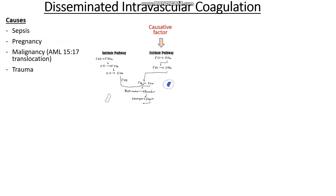Essentially, the interaction between these causative factors goes on to inappropriately activate our extrinsic pathway. We get activation of tissue factor, of factor III into factor IIIa, setting off the extrinsic pathway inappropriately, and therefore we end up producing lots and lots of thrombin. If you remember about the clotting cascade, this increase in thrombin can actually boost the activity of the intrinsic pathway, and therefore we end up producing lots and lots of uncontrolled clots all over our body.